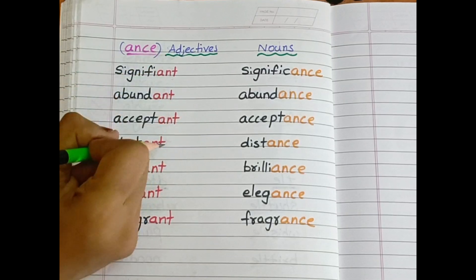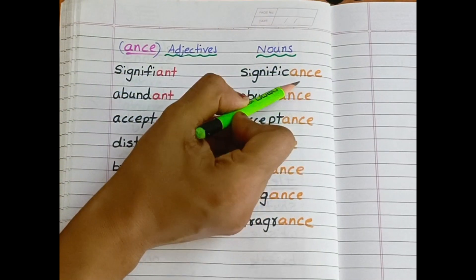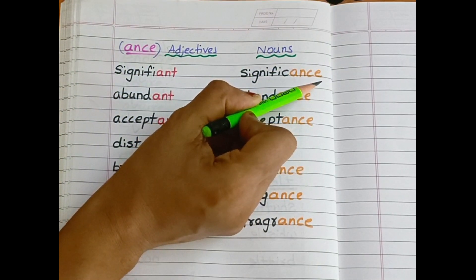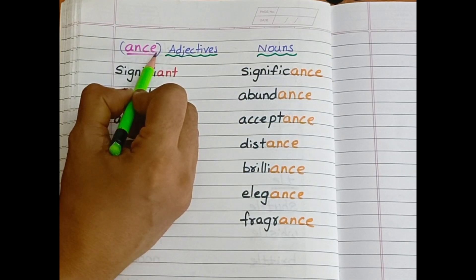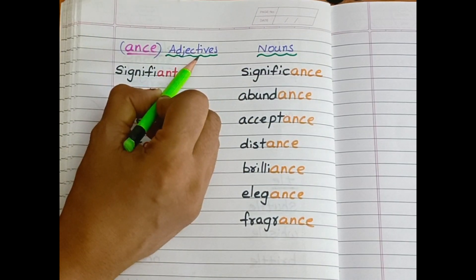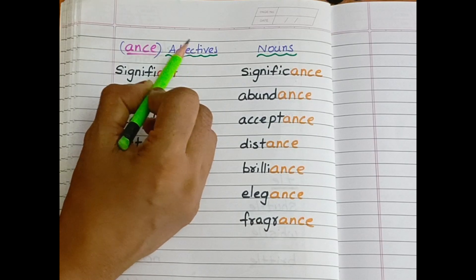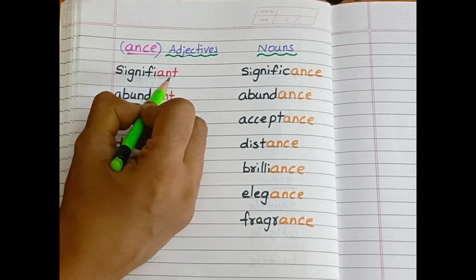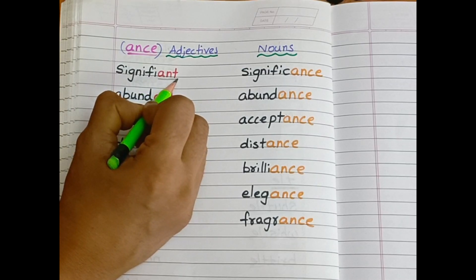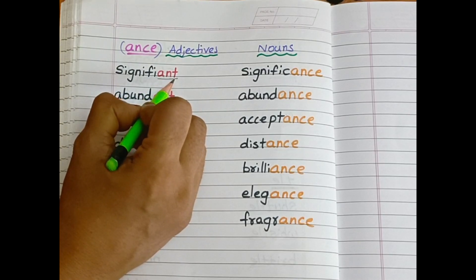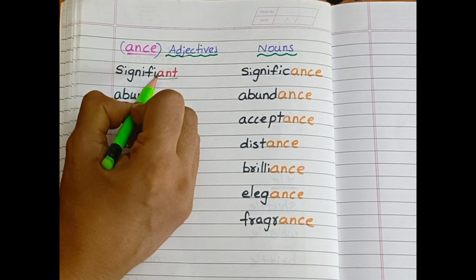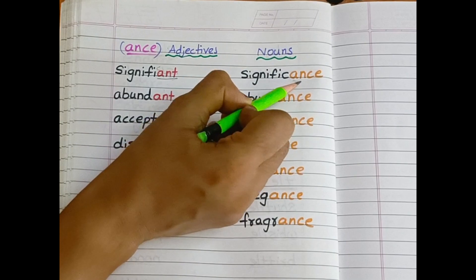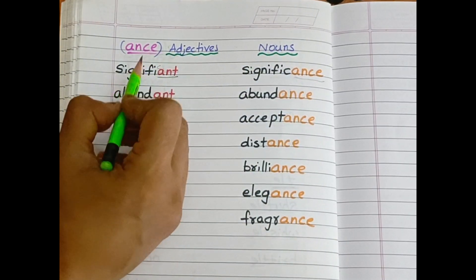And these are the words ending with a-n-c-e. So here a-n-c-e, if the word is adjective—adjective means describing noun—the word ends with a-n-t, and then replace a-n-t with a-n-c-e. Let us see here.